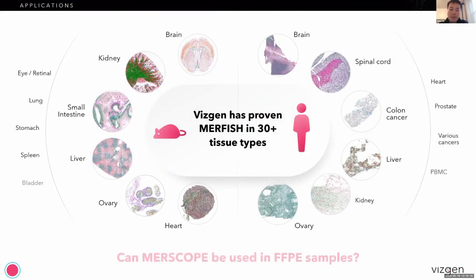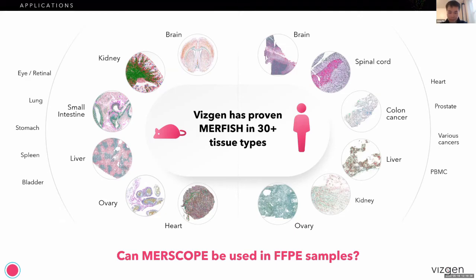At Vizgen, we keep pushing the limits of the technology, having proven MERFISH in more than 30 different tissue types, mainly in mouse and human. But we are now going beyond mouse and human — we have demonstrated in rats and in monkey. There are also researchers very interested in adopting this for plant research, such as Arabidopsis and meadow roots. As we move into non-mouse and non-human samples, we often hear that samples are prepared as FFPE, which is also widely used in the clinical space.